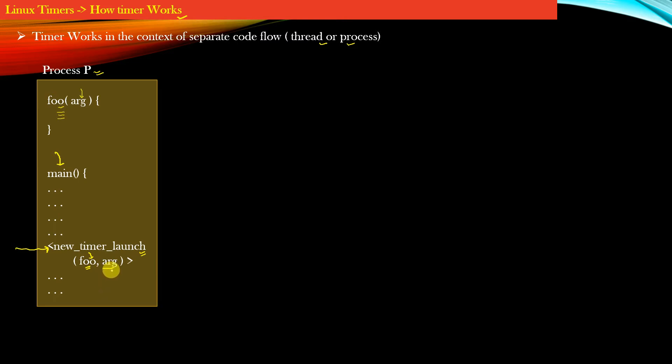So for each timer you have to pass at least two things. The first is the unit of work which the timer will execute when it fires. That unit of work is represented by this function foo and the second argument is the argument which will be passed to this function foo.